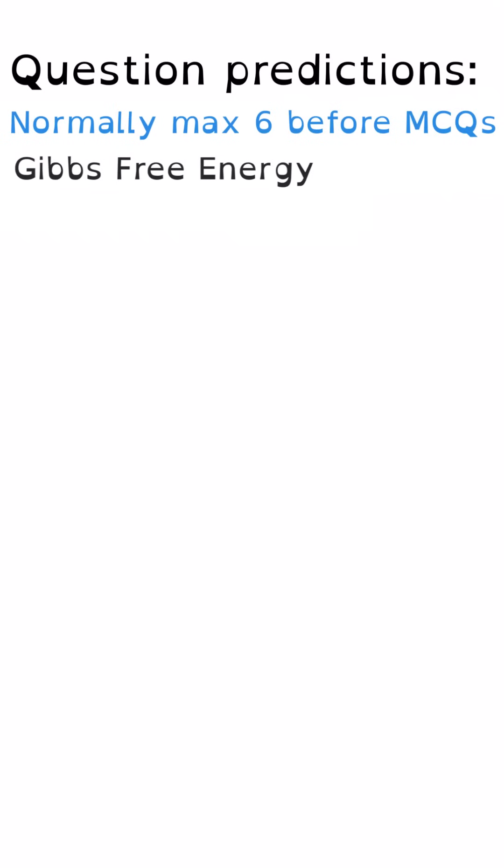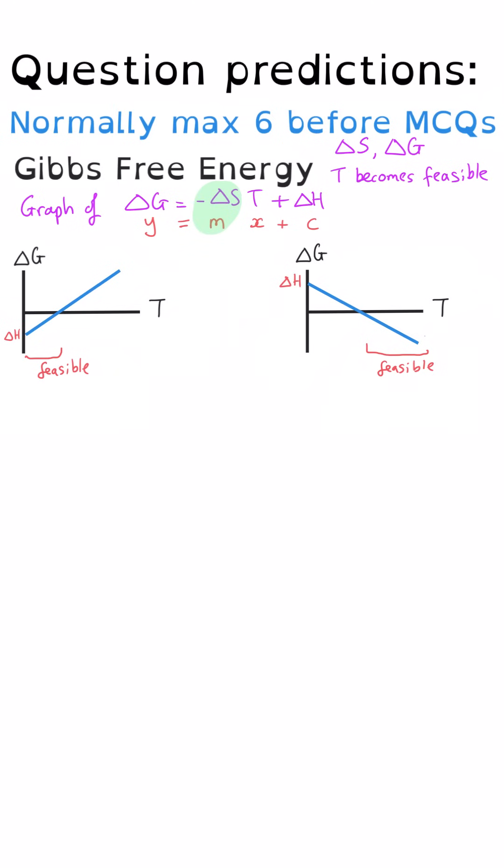My first predicted question is to do with Gibbs free energy and entropy. This could be calculating entropy change and then using it to work out delta G or working out the temperature at which a particular reaction becomes feasible. Alternatively, there hasn't been very much emphasis on graph skills so far from the two papers that there's been so I think plotting a graph maybe of delta G is equal to negative delta ST plus delta H. And I've written it in that particular arrangement because when you plot it like that you've got a graph of Y equals MX plus C. And so negative delta S is the gradient for this line and delta H is the Y axis intercept. And you can use that to look at feasibility and show how it might increase or decrease as temperature increases. And you can work out from the graph the temperature at which a reaction becomes feasible and even work out what delta H is from the Y axis intercept.